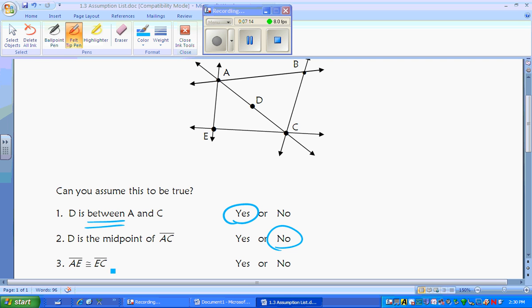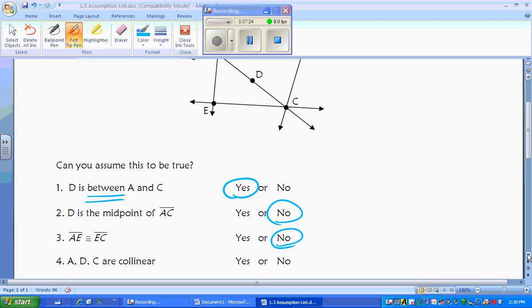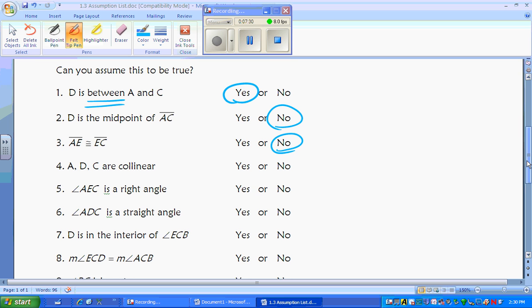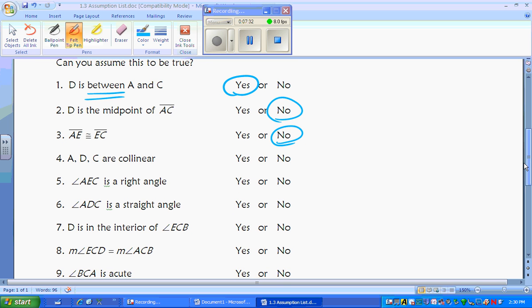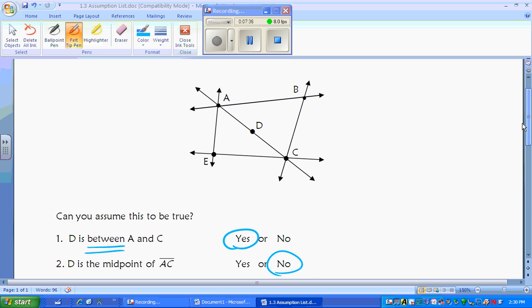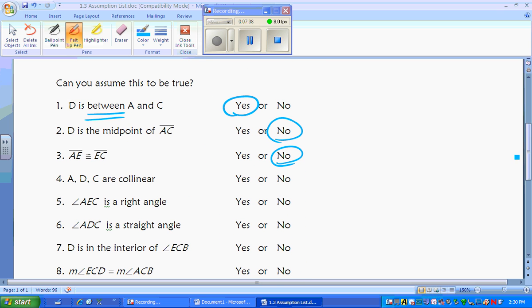Is AC congruent to EC? Looking at it, they don't look congruent to me, but they're not marked either. So no, we cannot assume that two things are congruent if they're not marked. ADC is collinear. Are ADC collinear? Sure, there's a line connecting all three. Yes, you can assume if something is collinear.